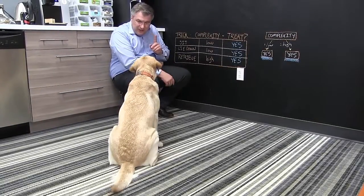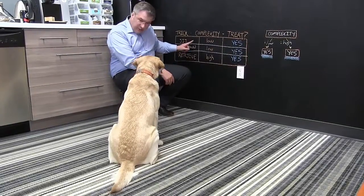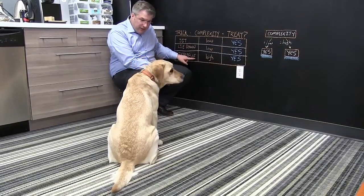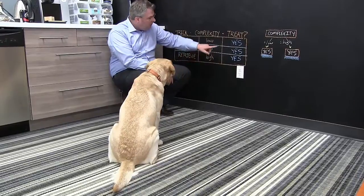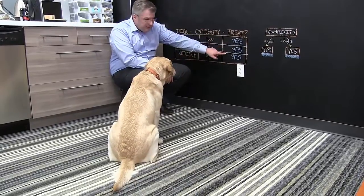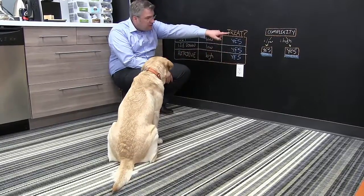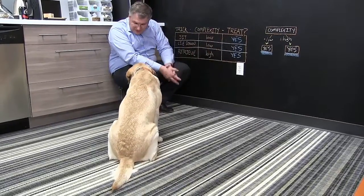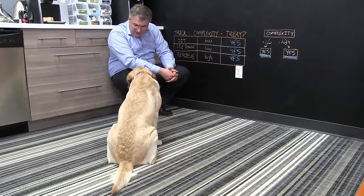What's really interesting is, no matter what trick you're doing, you're always getting a treat. So that's the decision tree. So the complexity doesn't really matter.